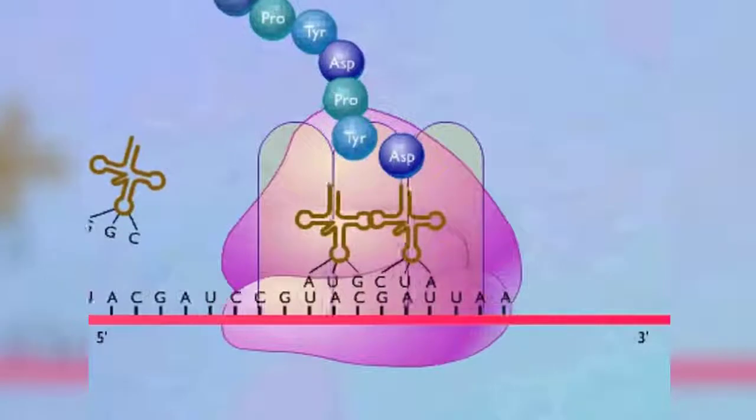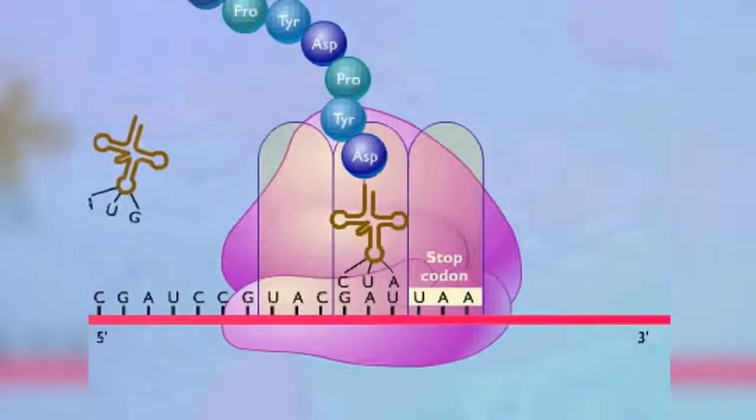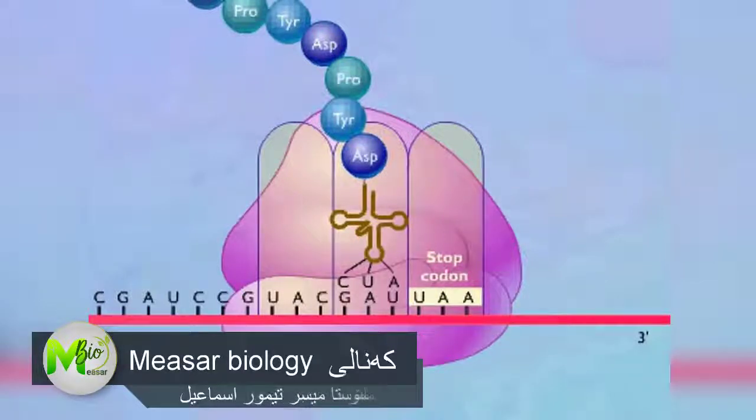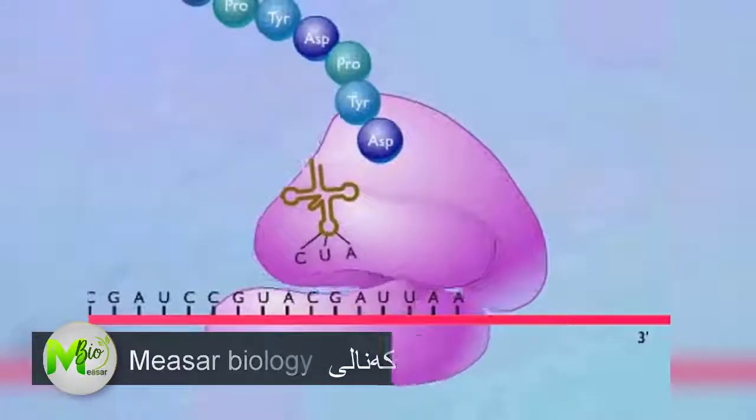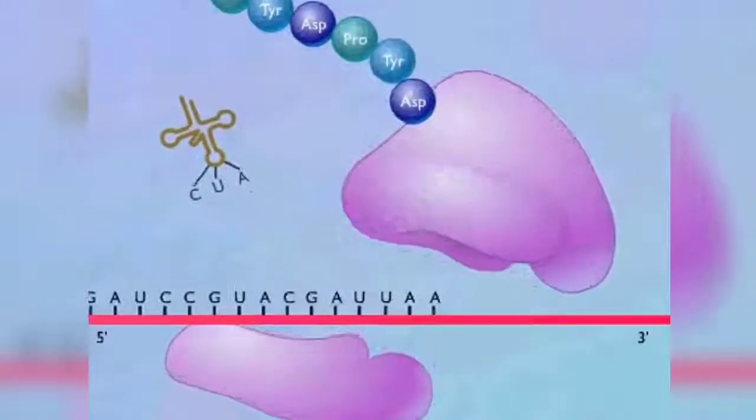Elongation of the polypeptide is terminated when a stop codon moves into the A-site. A stop codon does not specify an amino acid and does not have a corresponding transfer RNA. The ribosome dissociates into the 30S and 50S subunits, and the messenger RNA and protein are released.